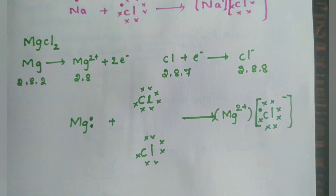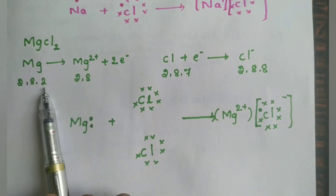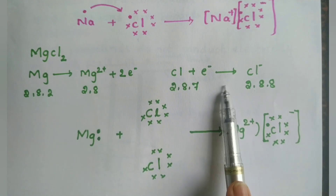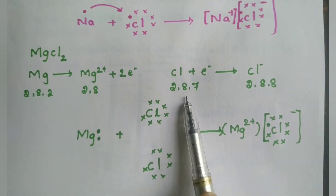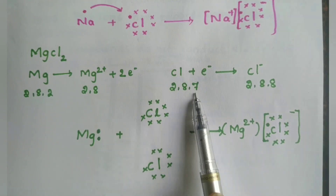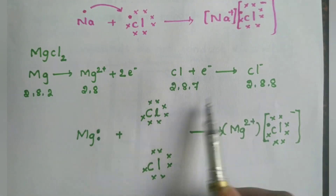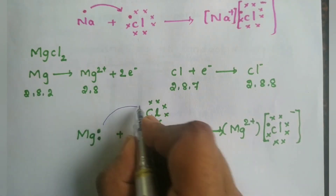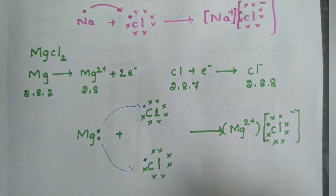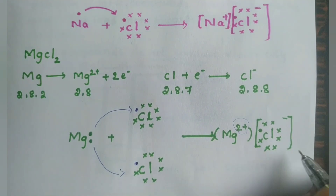Let us take another example — magnesium chloride. Magnesium has atomic number 12, electronic configuration 2,8,2, so two electrons are in excess. It has to lose two electrons to gain the octet. Chlorine has atomic number 17, electronic configuration 2,8,7 — it needs one more electron. So two atoms of chlorine are needed, each gaining one electron from magnesium. Magnesium becomes Mg²⁺ by losing two electrons to reach the octet level, and the compound formed is MgCl₂.